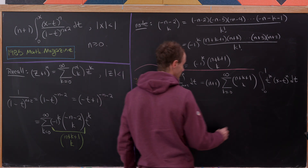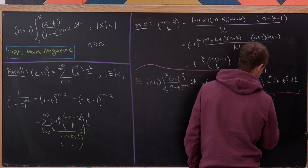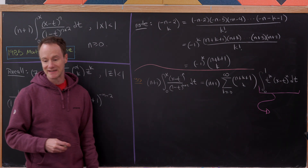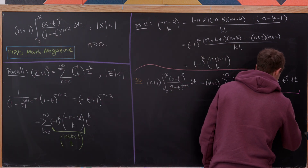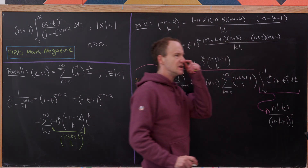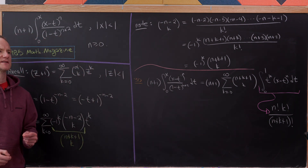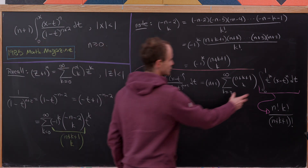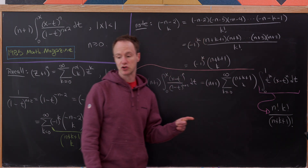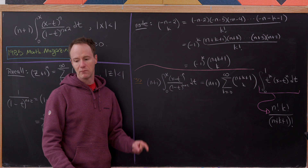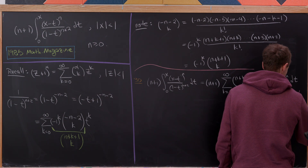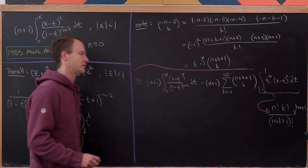That inner integral has a well-known value explored in a previous video. When the upper limit is 1, it equals n factorial times k factorial over n plus k plus 1 factorial via the beta function. With a free upper limit x, we instead get x to the k plus n plus 1 times n factorial times k factorial over n plus k plus 1 factorial, via a simple substitution.